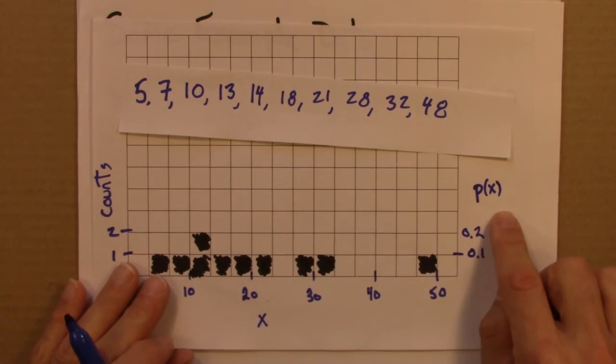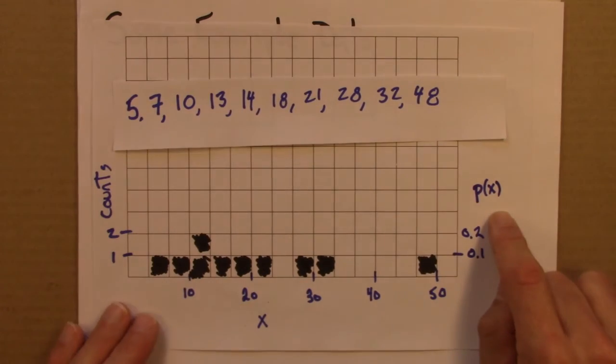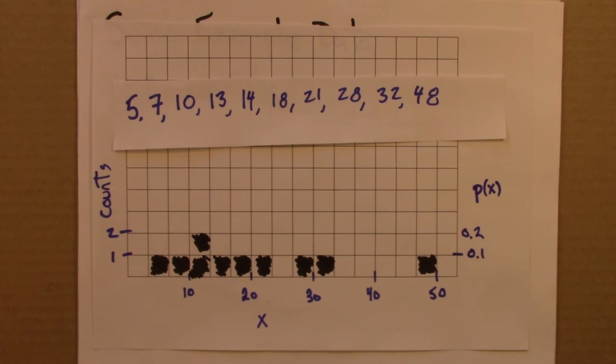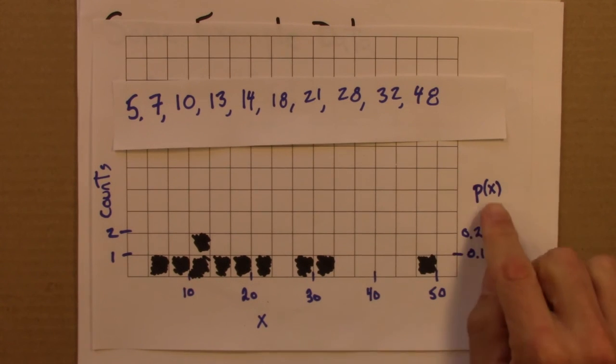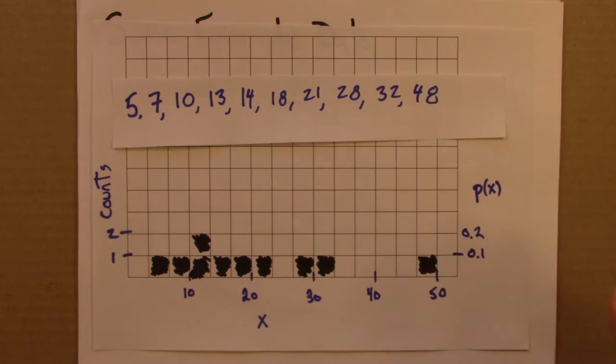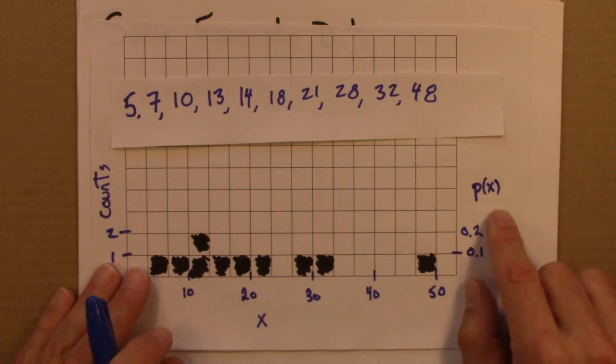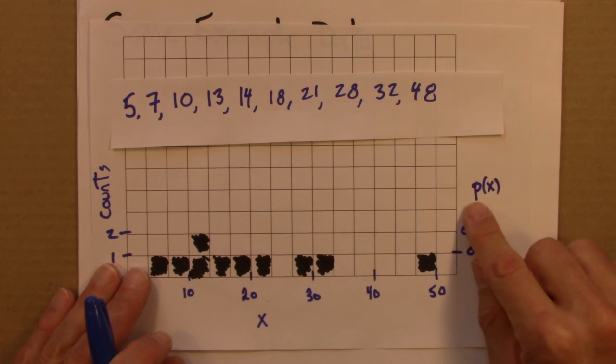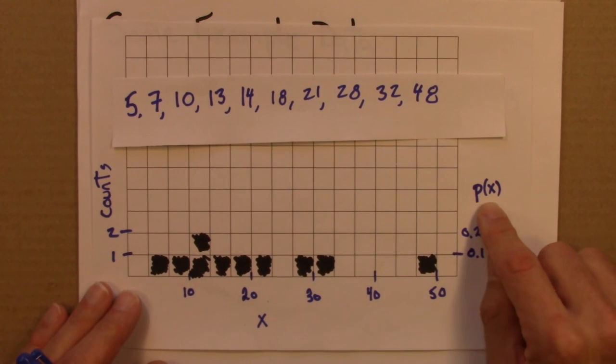and this I might think of as P, the probability of x. Now there's a few subtleties with this interpretation. This is one of those places where it matters if we're thinking about a continuous or discrete distribution. But in either case, we can think of this more or less as a probability. It's a lower case p.